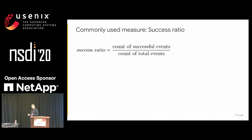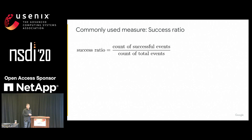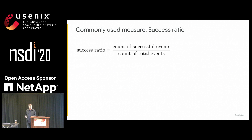The most commonly used metric for computing availability is success ratio. It is common and popular because it's very easy to measure — it's simply a ratio of the count of successful events to the count of total events.